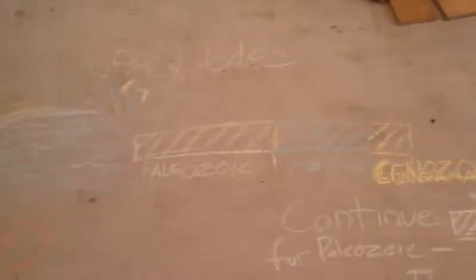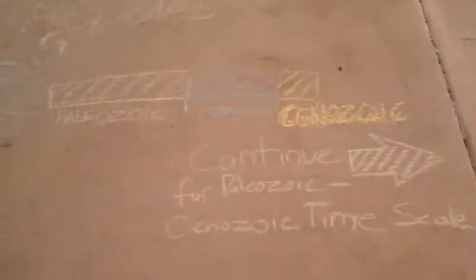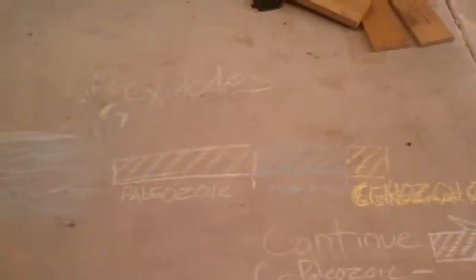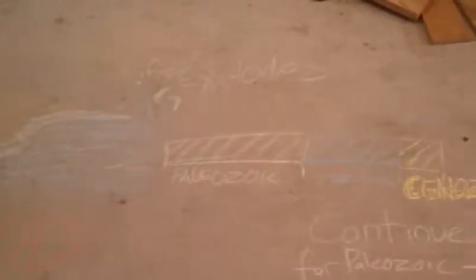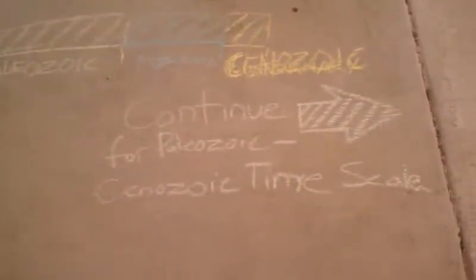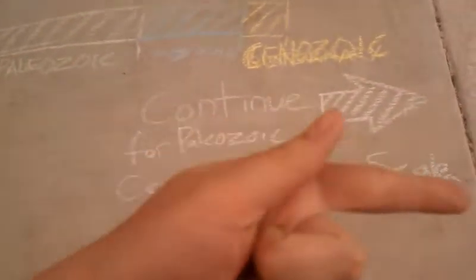Because the Precambrian period is large enough to be drawn out as its own separate section, this shows the Paleozoic, Mesozoic, and Cenozoic in relation to all that you just saw. After the thaw, life decides to explode starting at 542 million years ago. Let's continue on for the Paleozoic and Cenozoic timescale.